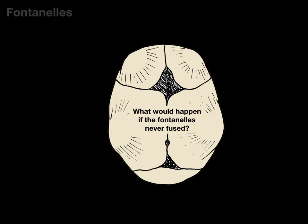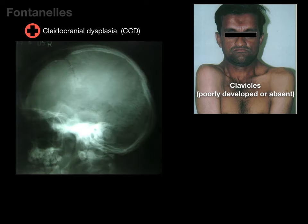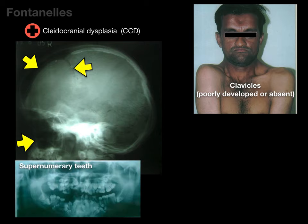What would happen if the fontanelles never fused? You can get a condition called cleidocranial dysplasia, or CCD. 'Cleido' means clavicle, because individuals with CCD have either poorly developed or completely absent clavicles — which is why one individual can push his shoulders in so close. 'Cranial' refers to the anterior fontanelle never fusing, which is visible as a large black space on lateral X-ray. Open sutures are present, maxillary sinuses don't develop properly, and they have supernumerary teeth, especially with deciduous teeth.